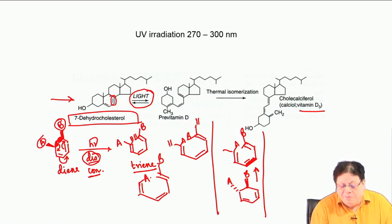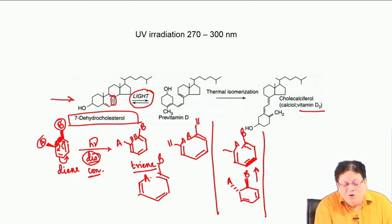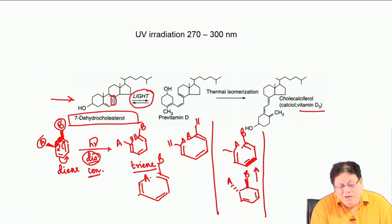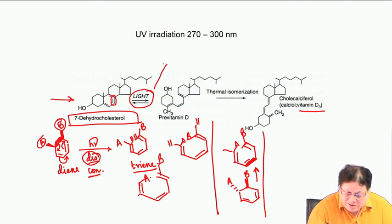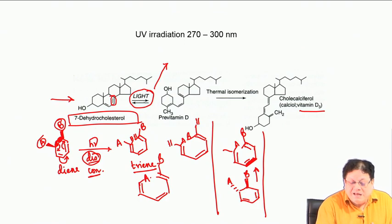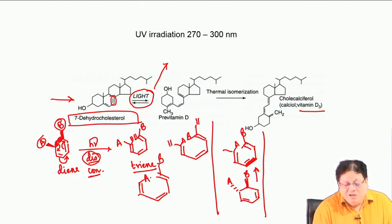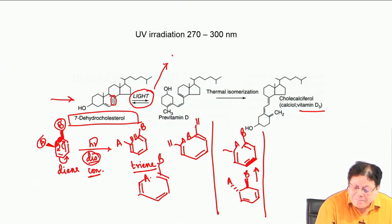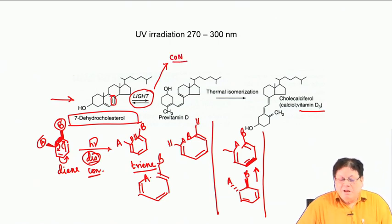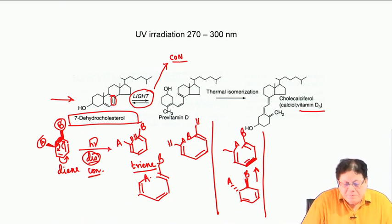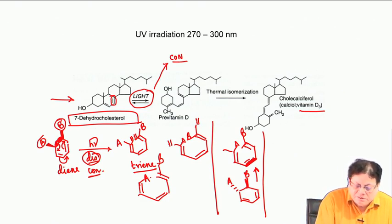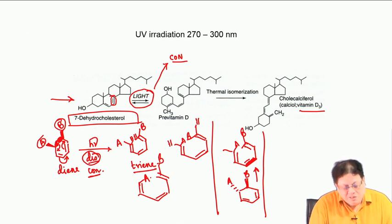Nature has picked light because this is a 6-electron ring-opening process. The rule states that for 6 electrons under thermal conditions it is disrotatory, but 6 electrons under light conditions undergo conrotatory motion.